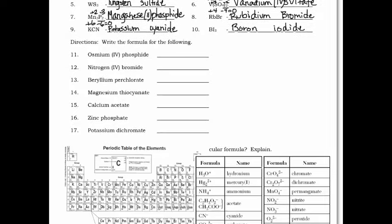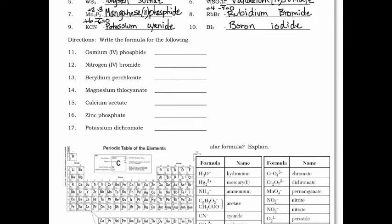On to the next section where we come up with the formula from the name. It's easier when they give us the oxidation number in the name. Osmium is Os — they're telling us in the name that it's a plus four — and it's with phosphorus. Looking up phosphorus's negative oxidation number, it's negative three. The two numbers do not cancel out and do not have a common factor, so we swap and drop: the three becomes the subscript on Os and the four becomes the subscript on P.